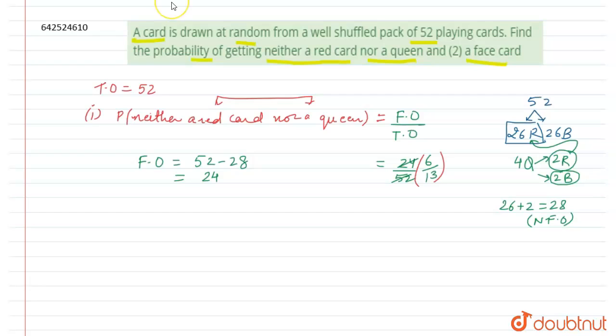Now let us take up the second part which says find the probability of getting a face card. The favorable outcome will now constitute only the face cards. Let us calculate the number of face cards. As we very well know, the face cards are jack, queen and king. These three are the face cards.